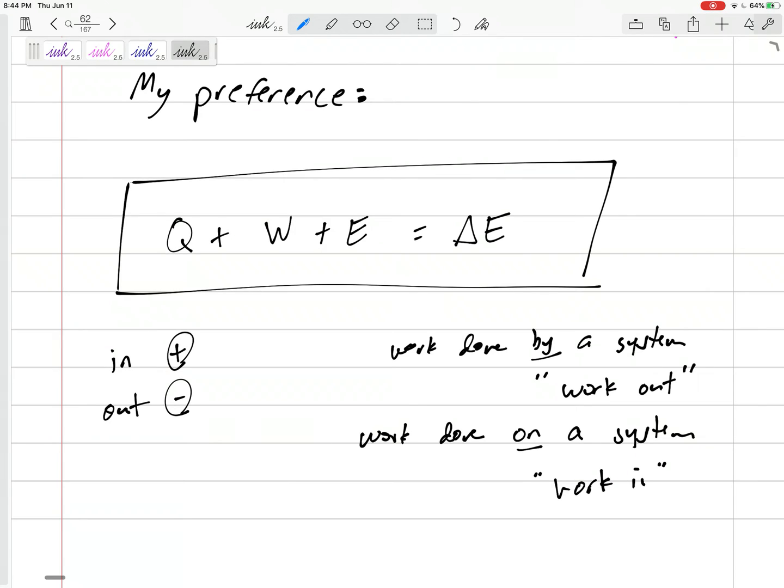So this is where I might deviate from the book just a little bit, but I think it makes sense to me. Everything in is positive, everything going out is negative. Everything going in is positive, everything going out is negative.